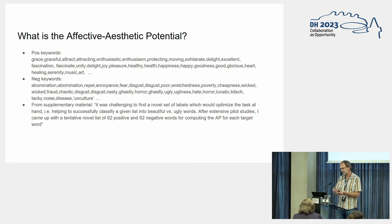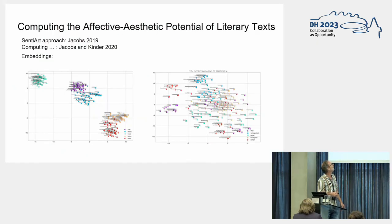So Jacobs presents this in 2017 as a somewhat tentative approach. I don't think that since then the list has become less tentative except that it's now being used in more contexts. The next publication about this was Jacobs and Kinder 2020.